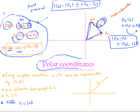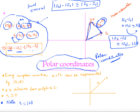We have defined the absolute value and conjugate of complex numbers, and covered key inequalities. The next representation — polar coordinates of complex numbers — will be covered in the next video. Thank you.